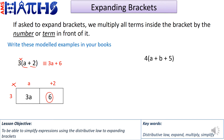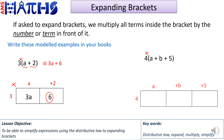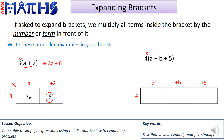Let's move on to our second example: 4 multiplied by a plus b plus 5. So 4 needs to multiply everything inside the bracket. I've drawn 3 boxes because there are 3 terms in the bracket: a, b, and 5. I've split those terms above the boxes, and 4 is written to the left. So we do 4 times a to get 4a, 4 times b to get 4b, and 4 times 5 to get 20. Our answer is 4a plus 4b plus 20.